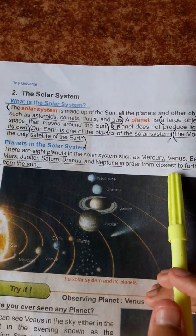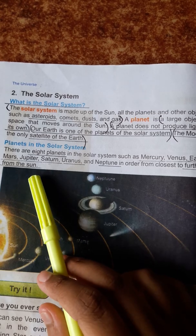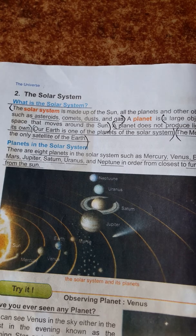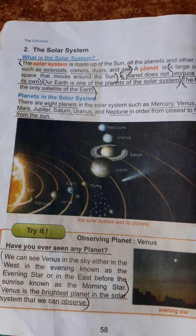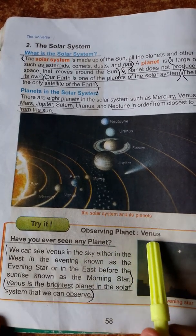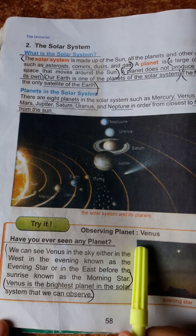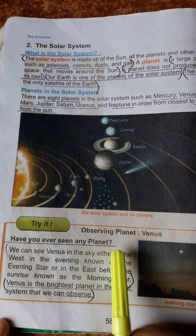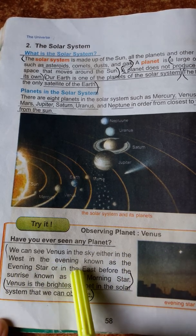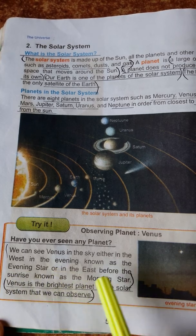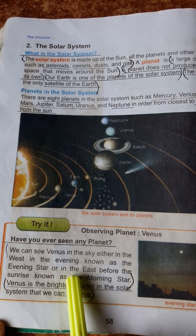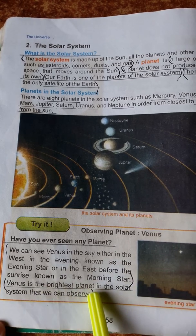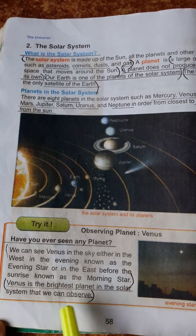These planets are ordered from closest to farthest from the sun. Have you ever seen any planet? We can see Venus in the sky either in the west in the evening, known as the evening star, or in the east before the sunrise, known as the morning star. Venus is the brightest planet in the solar system that we can observe.